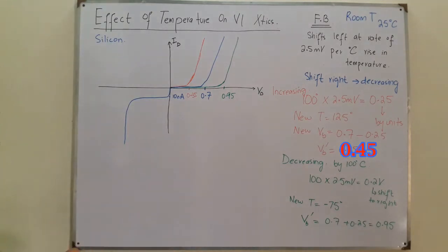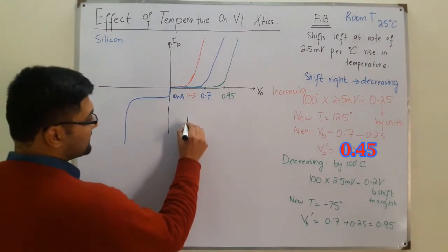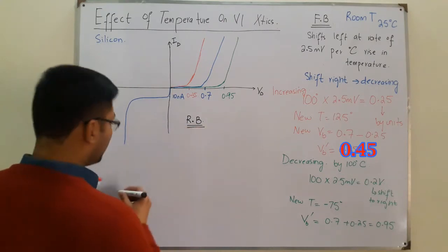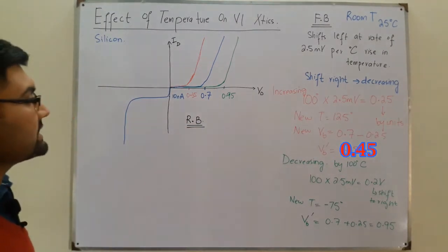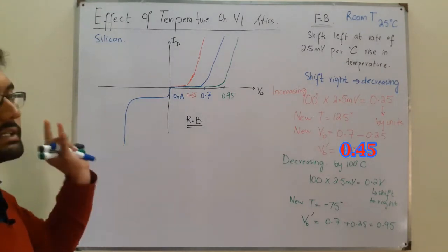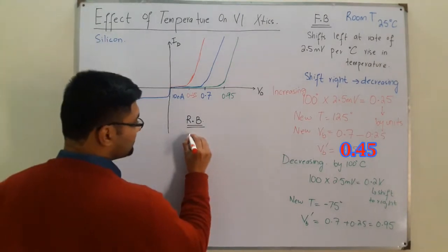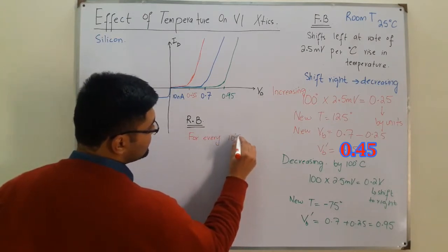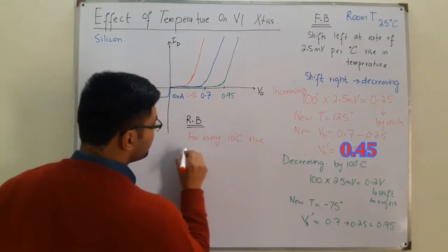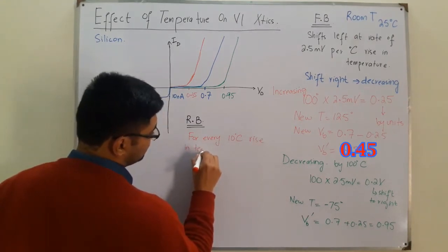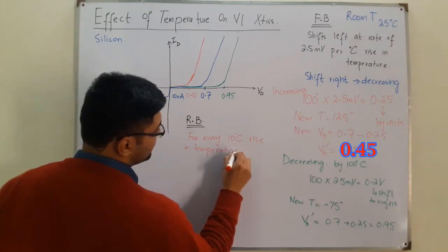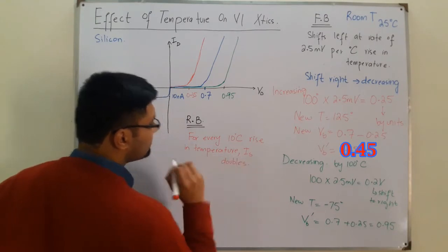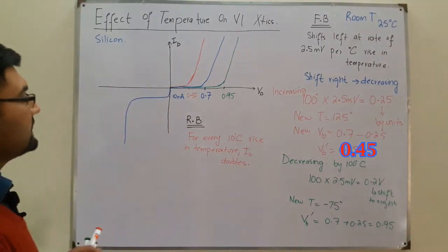Now for the reverse bias condition: for every 10 degree rise in temperature, the reverse saturation current doubles. For every 10 degrees Celsius rise in temperature, the reverse saturation current — that is IS — doubles.